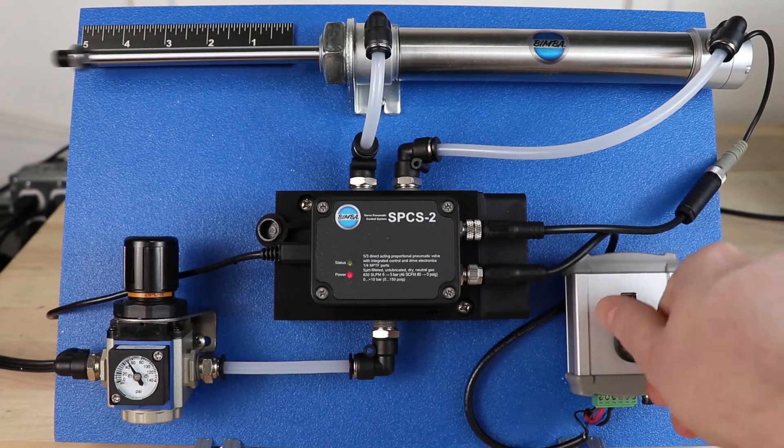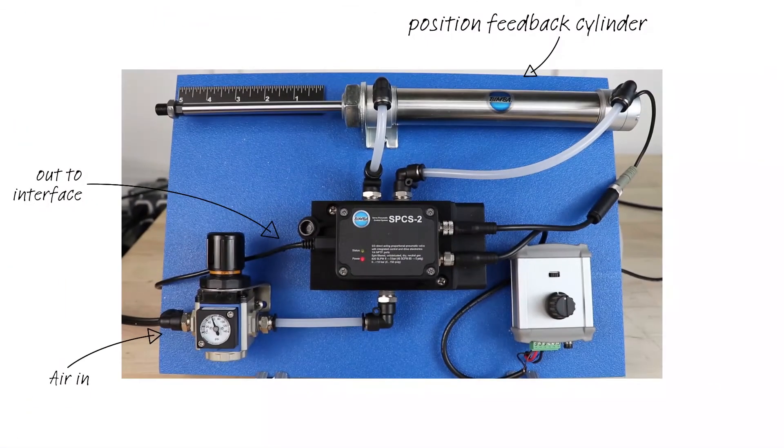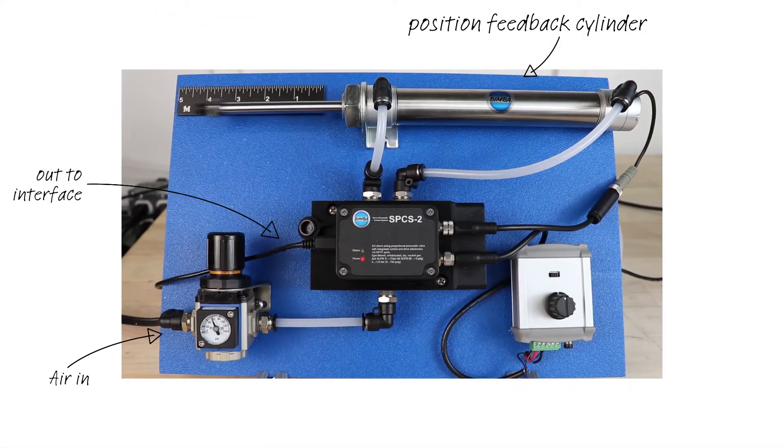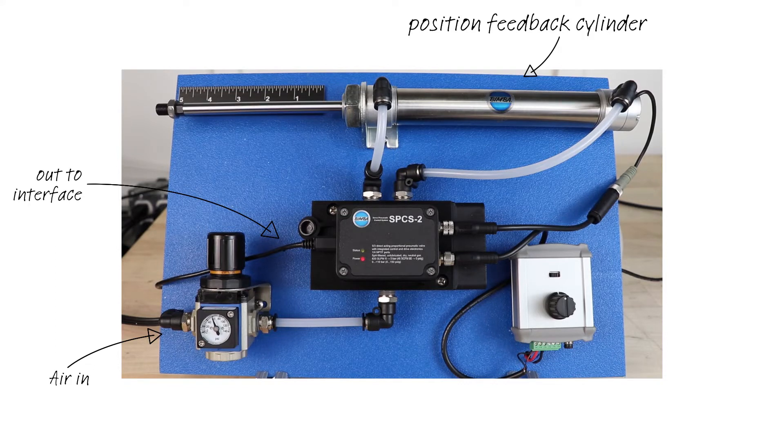At its core, the SPCS2 is a high flow pneumatic control valve that can be paired with a position feedback cylinder to create a closed-loop system for quick, accurate payload positioning.